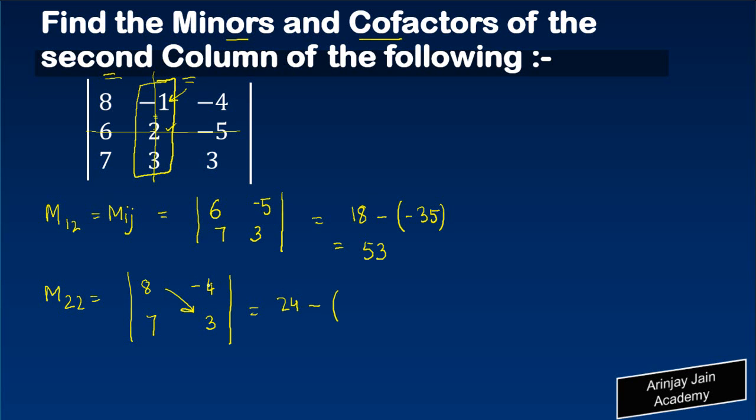24 plus 28 is 52. Let's find it out for M_3, the third row second column.